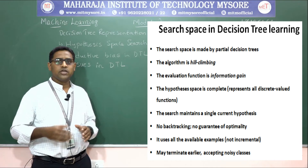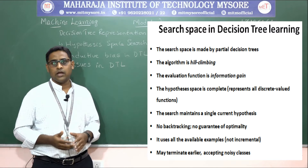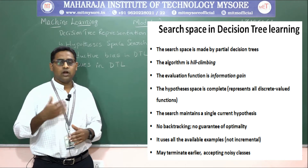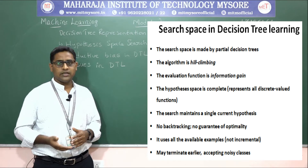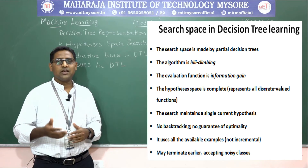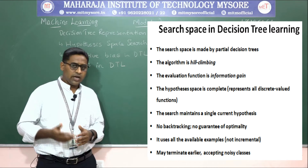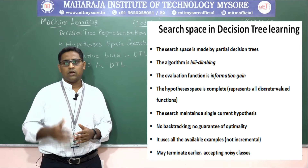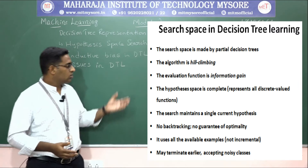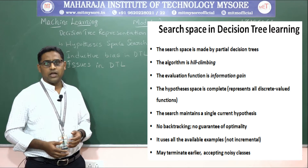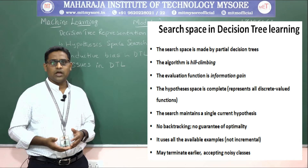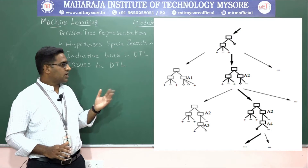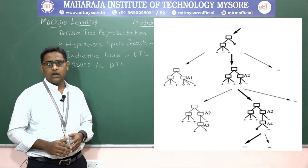The algorithm uses only the available examples and will not use additional incremented examples. It may also terminate earlier or accept noisy classes — the tree may terminate early or accept noisy class labels.